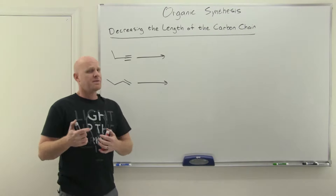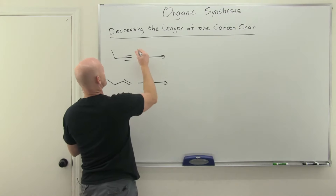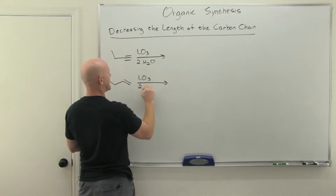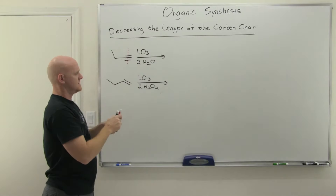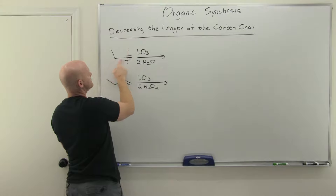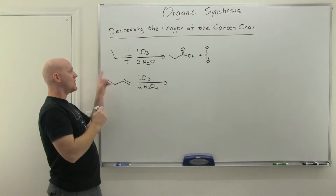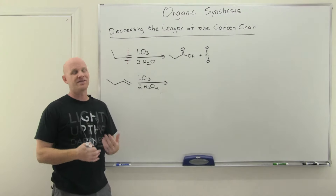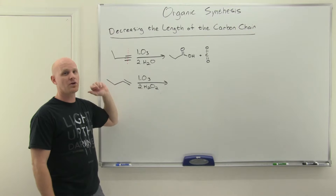Now we want to look at decreasing the length of a carbon chain, which can happen with either an alkyne or alkene via ozonolysis. With a terminal alkyne, ozonolysis is carried out with ozone followed by water, and you get carboxylic acids on both sides if it's internal. If it's a terminal alkyne, the terminal carbon becomes carbon dioxide instead, giving you a three-carbon carboxylic acid from a four-carbon starting chain. This is a common way to shorten your chain by one carbon with a terminal alkyne.